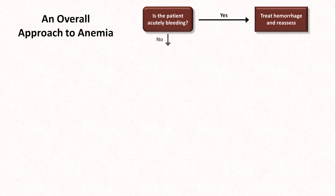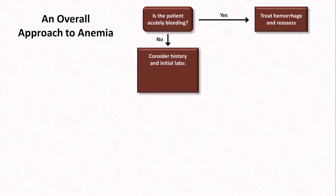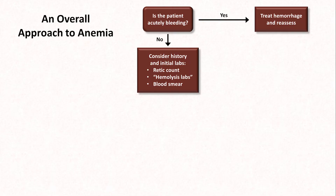If there's no hemorrhage, consider the history and some initial labs — specifically the RETIC count, the so-called hemolysis labs including LDH, indirect bilirubin, and haptoglobin, and the blood smear. These labs will help to guide you towards underproduction versus hemolysis. Because underproduction is much more common than hemolysis, it's pretty typical for clinicians to go ahead and order an iron panel when ordering these others to save time, which is perfectly reasonable to do.